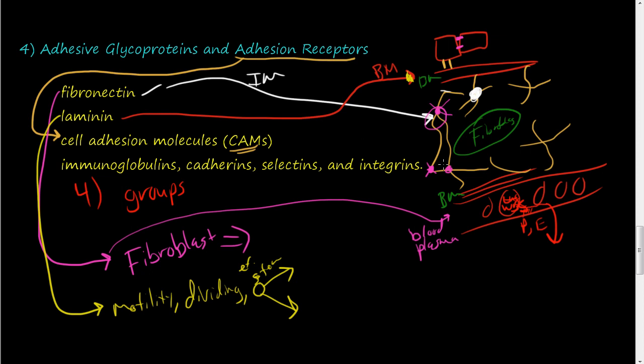Fibronectin also plays a role in motility. When these leukocytes get out here into the extracellular matrix, it helps with directions. They're all kind of interrelated.